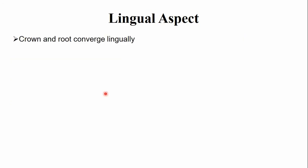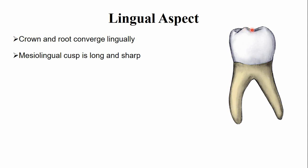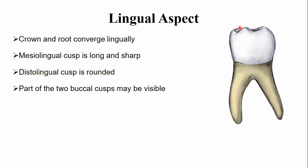From the lingual aspect, the crown and the root converge towards the lingual side, especially the mesial portion, which converges more. There are also two cusps on the lingual side: the mesial lingual cusp, which is long and sharp, while the distal lingual cusp is small and rounded. From the lingual side, you can also see part of the two buccal cusps — the mesial buccal and the distal buccal cusp.